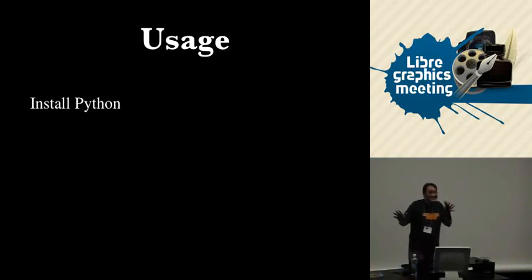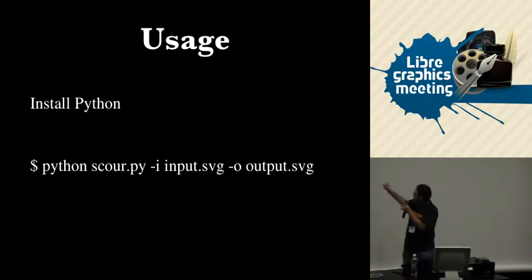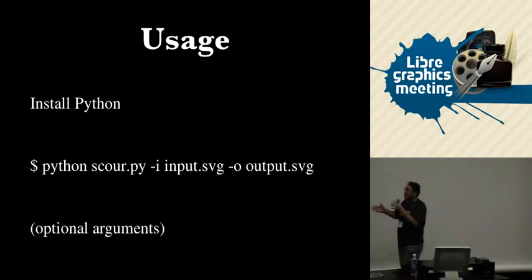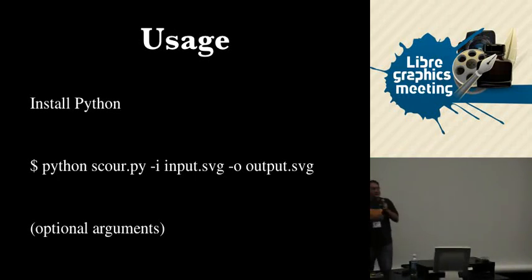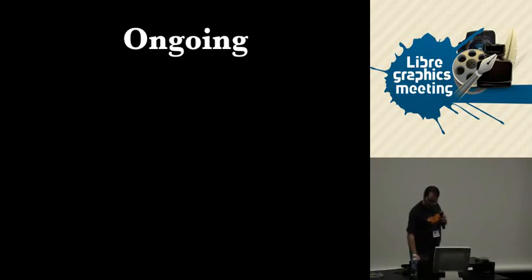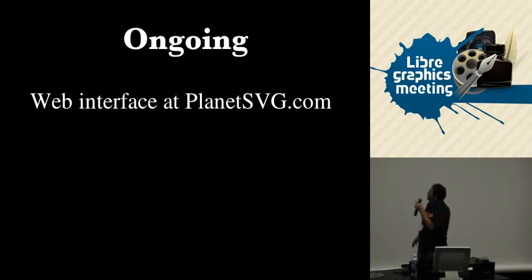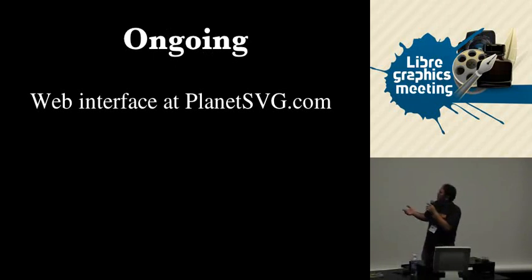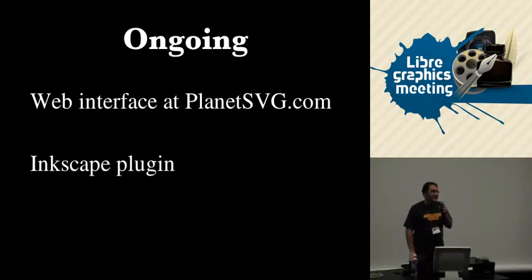The problem with Scour right now is that it's rather difficult to use. You have to install Python, then type in a command with an input, an output, and optional arguments. So it's actually very easy — you give it the file name and it cleans up the file for you. Future work includes making a web interface at planetSVG.com, a community site for SVG where people will simply be able to upload their files and convert them into web-ready SVG. We're also working on an Inkscape plugin so people can do all these functions natively through Inkscape.